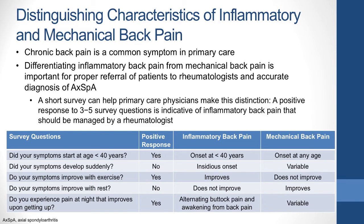Chronic back pain is a common symptom of patients seen by primary care physicians. In fact, results of United States national surveys indicate that roughly one-quarter of adults report having back pain in the last three months. Therefore, differentiating inflammatory back pain from mechanical back pain is important for proper referral of patients to rheumatologists and ultimately accurately diagnosing axial SPA.